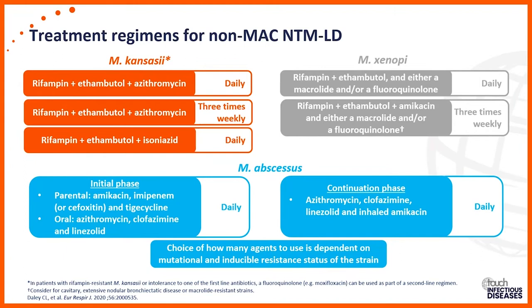Several non-MAC NTM lung diseases are discussed in the guidelines. Mycobacterium kansasii can be treated either with daily or three-times-a-week therapy with rifampin, ethambutol, and azithromycin. You would consider the comorbidities of your patient and the amount of disease on CT when choosing daily or three-times-a-week treatment. You can also substitute isoniazid for azithromycin in a daily fashion, or substitute a fluoroquinolone such as moxifloxacin if needed.